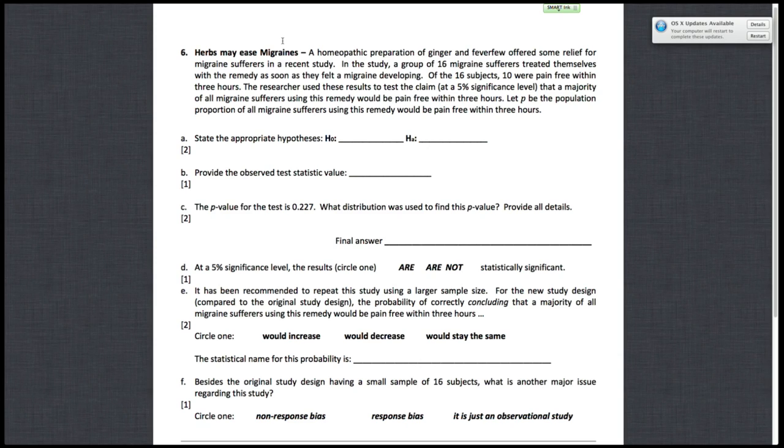All right, so for page five, we have two questions. One is just dealing with a population proportion hypothesis test, so that's six, and seven is just a general question about p-values.